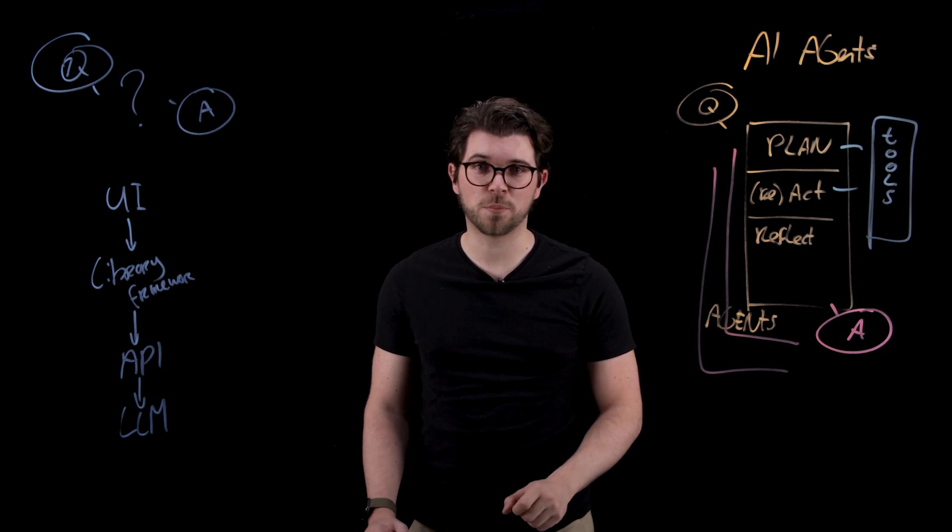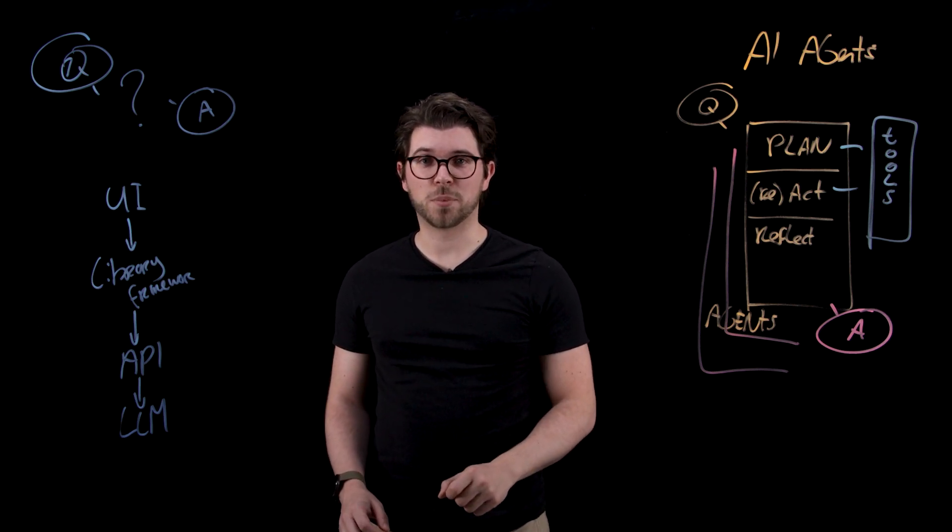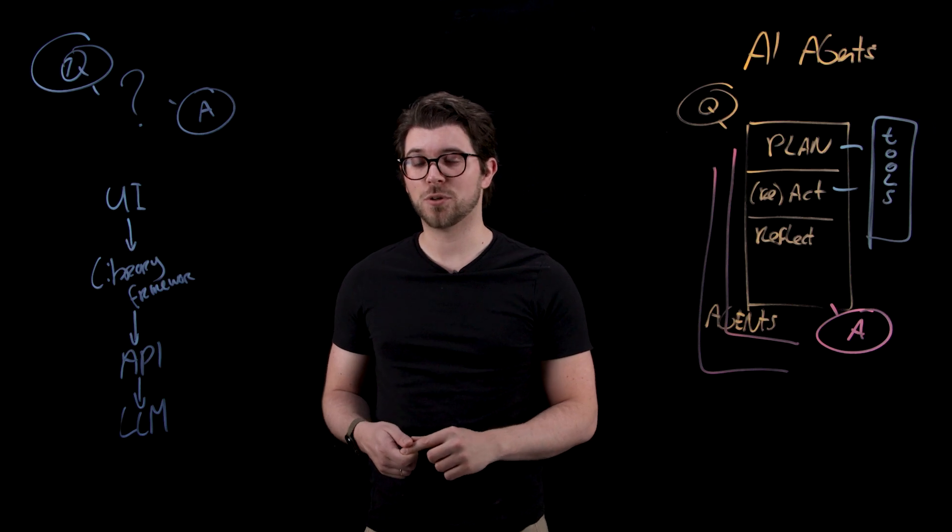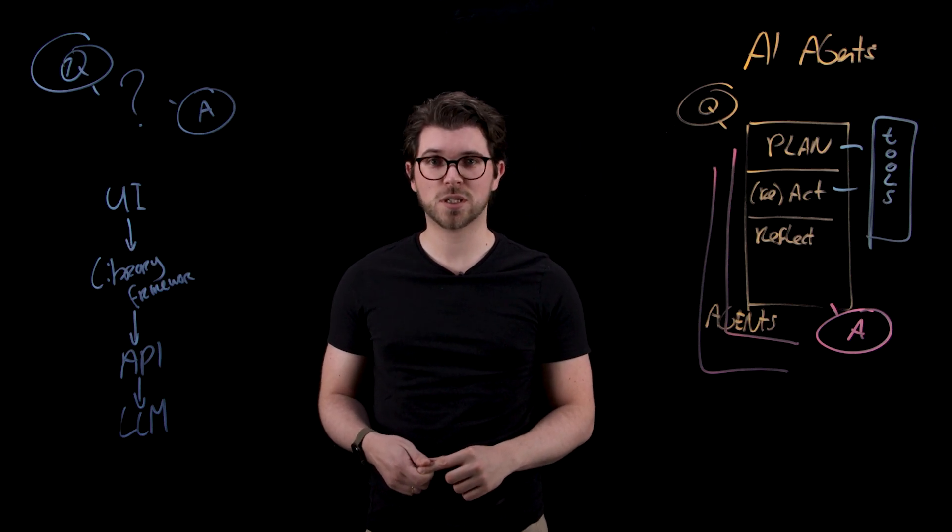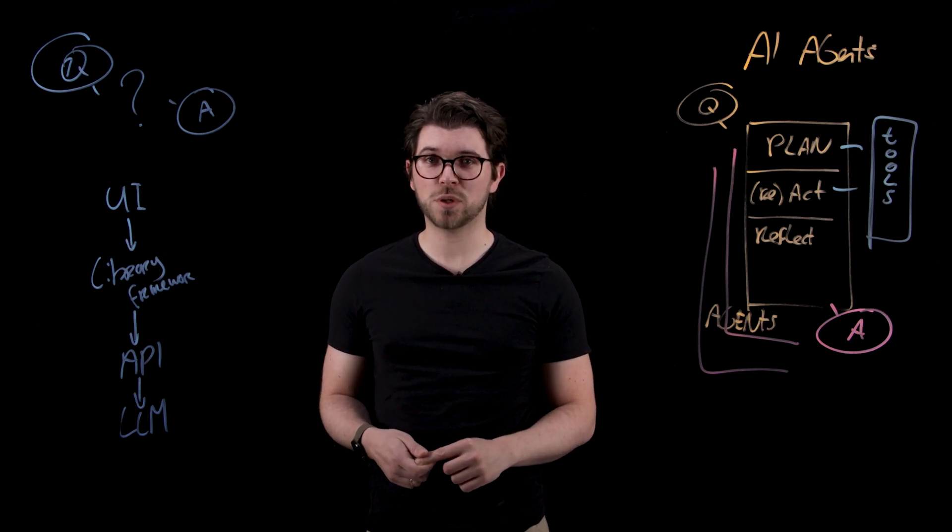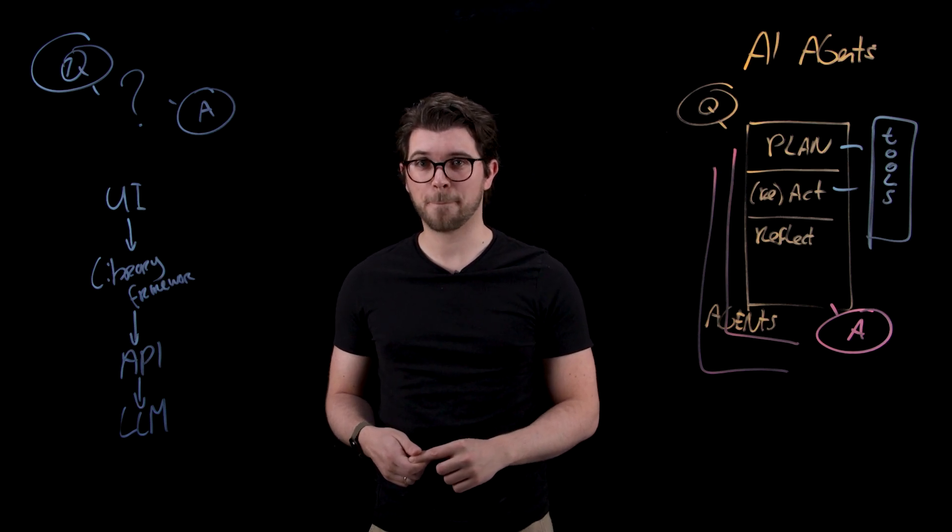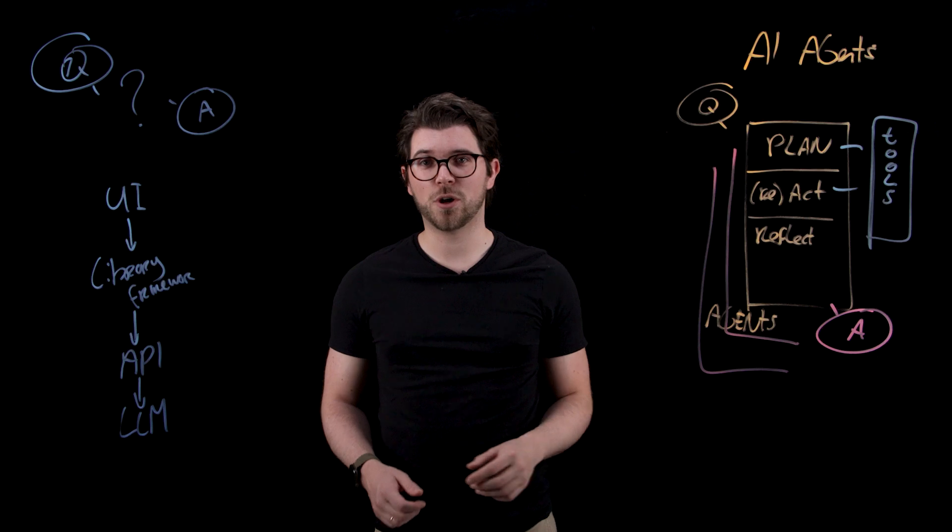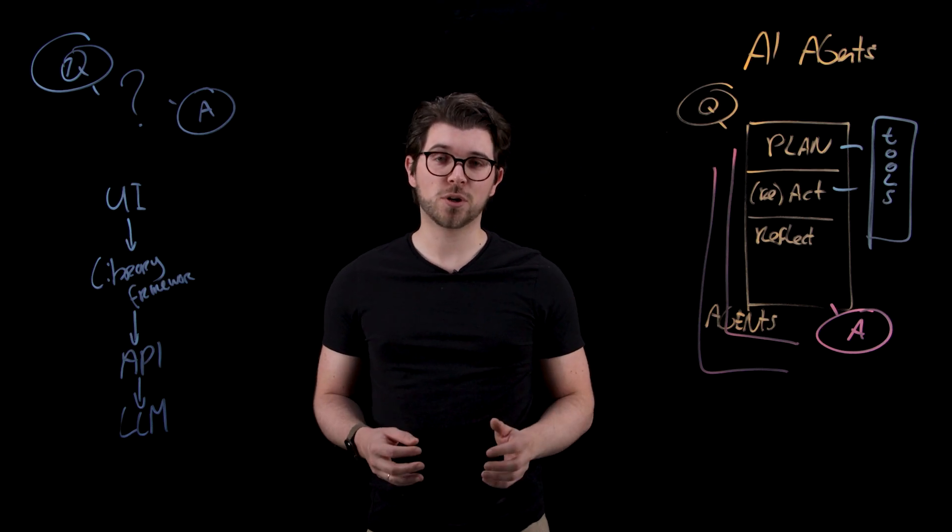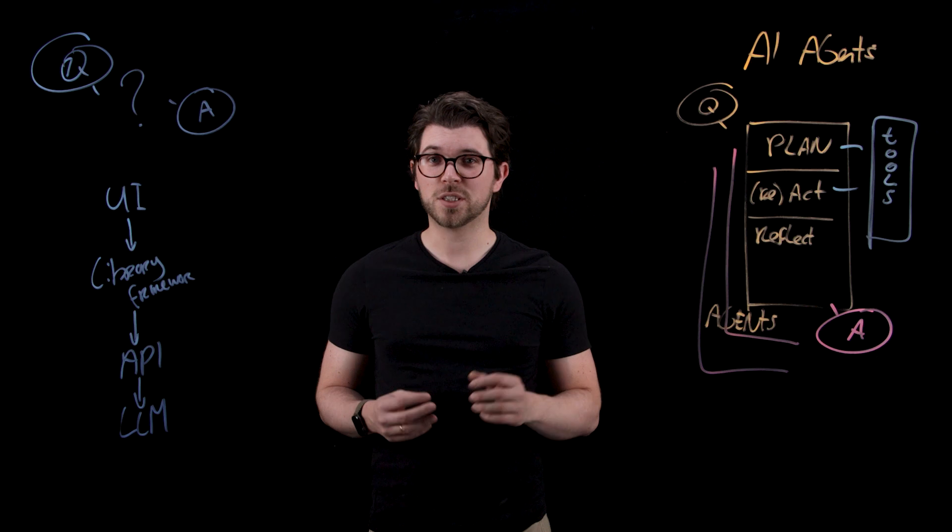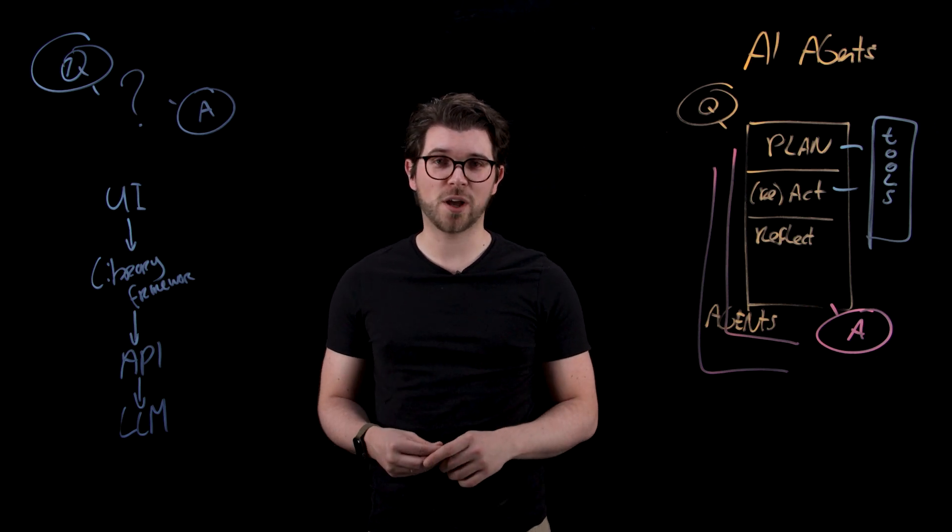So in this video we looked at three different patterns to implement AI applications. The first one was basic prompting, where you use a prompt which includes your question and a set of instructions. The second one was RAG or retrieval augmented generation, where we use a vector database to make LLMs context aware of your data. And the final one was agents, where you use an agent that will look at a set of tools and based on the tools is going to answer your question. So with this I hope you can start building your AI applications today.